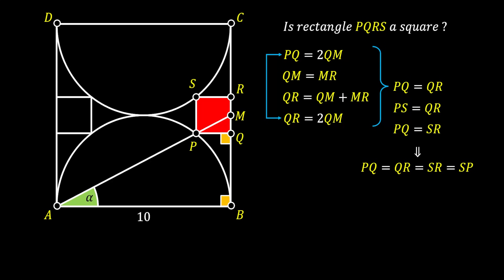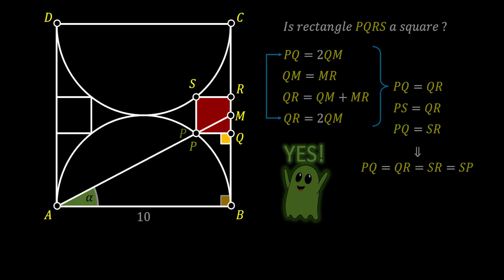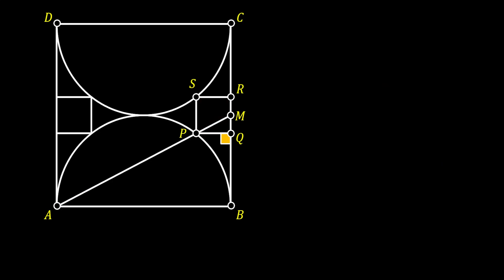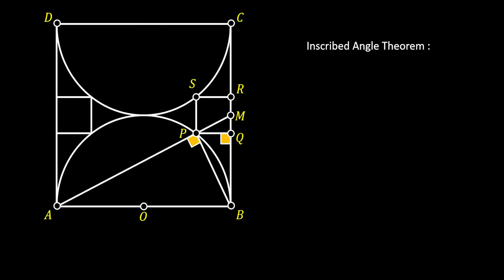And all angles are 90-degree angles. So to answer our previous question — is rectangle PQRS a square — the answer is yes. This is going to make our lives a little bit easier. And now, let's continue on by pulling the line from point B to point P. And we know that the angle at the point P must be a right angle.